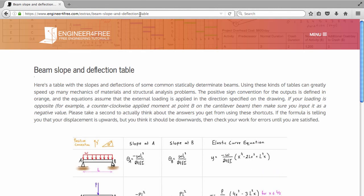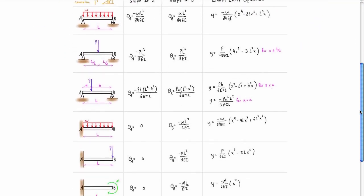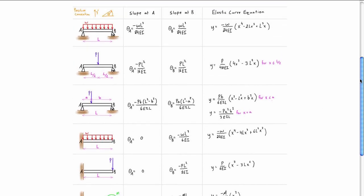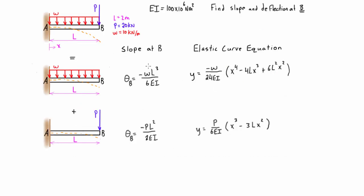I've got a reference table on the website — the URL is shown here, and I'll put the link in the description. Coming down to the cantilever beam section, we're looking at slope at B and the elastic curve equation. We have a cantilever beam with a distributed load across the whole span and also a cantilever beam with an individual point load. We'll bring these into our problem, fill out the slope equations and elastic curve equations using our known values, then sum them to find slope and deflection at B.